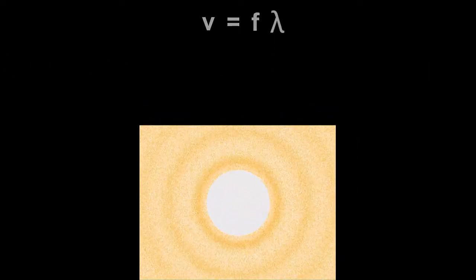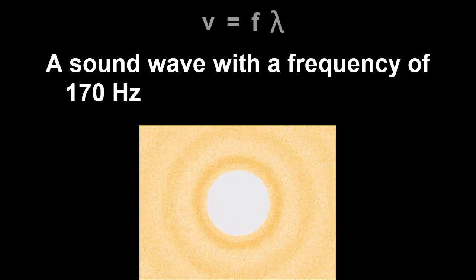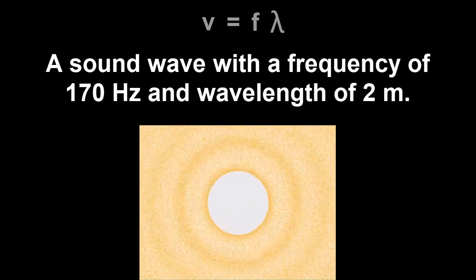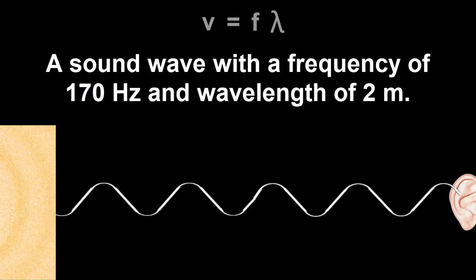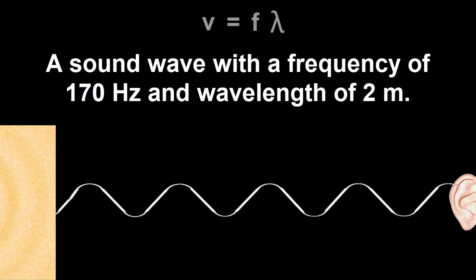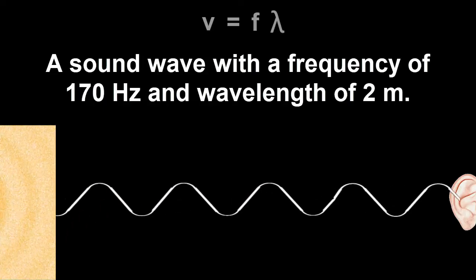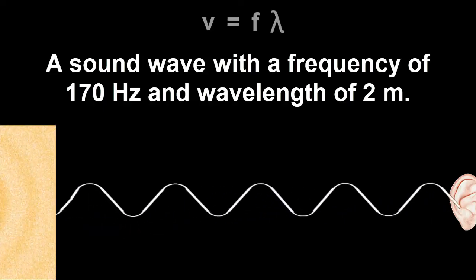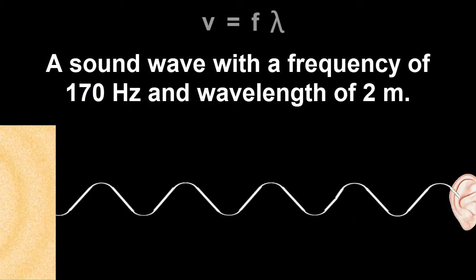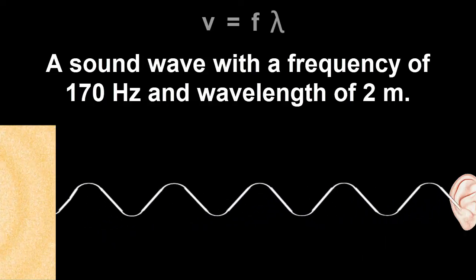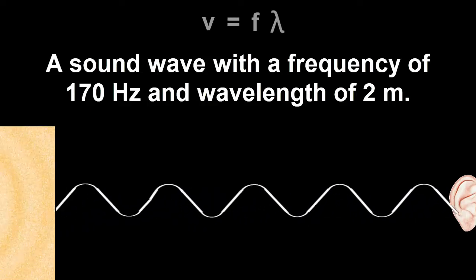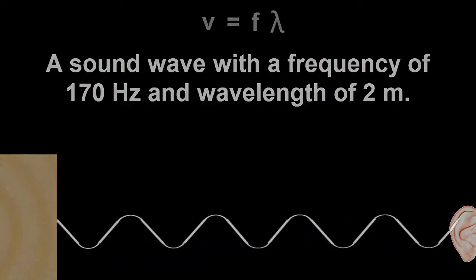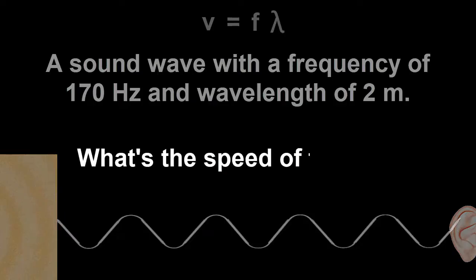Now let's try a sound wave with a frequency of 170 hertz and a wavelength of 2 meters. That means 170 sound waves are hitting your ear drums each second and 2 meters apart. The sound tone is doing that to your ears right now. What's the speed of the wave?